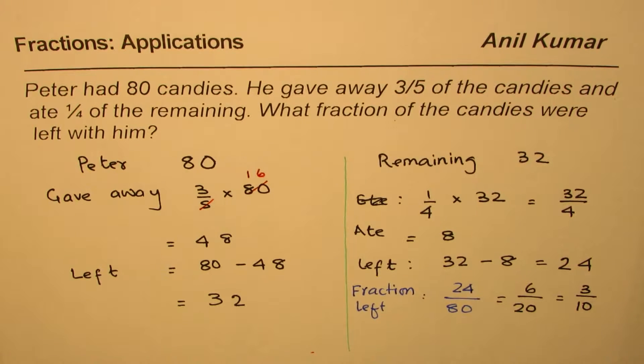So we get 3/10 as our answer. So you can simplify this by dividing in stages, and we got 3/10. So our answer is 3/10 of candies left.